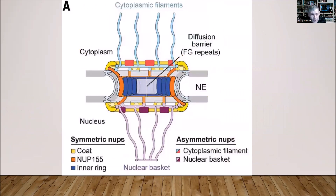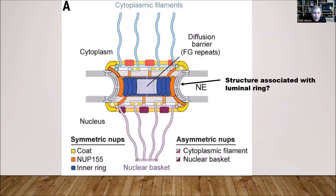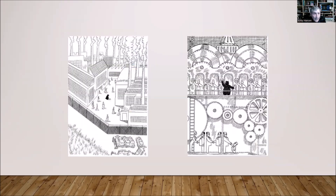Here's a more simplified cartoon view. Once again, the cytoplasmic filaments are attached to the cytoplasmic ring, which is attached to the inner ring lining the inside of the pore itself. Below that is the nucleoplasmic ring inside the nucleus, and attached to it at the bottom is the nuclear basket. Note the section in the middle marked 'diffusion barrier (FG repeats)' — we'll have more to say about this. The luminal ring may be indicated by the structure outlined at the U-shaped junction of the inner and outer membranes, supporting the idea that it causes those membranes to fuse together.